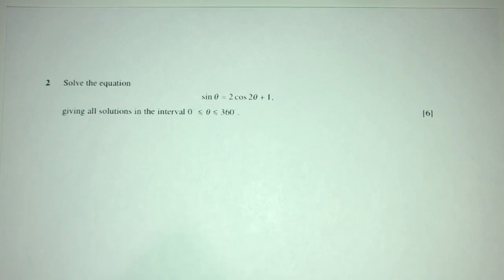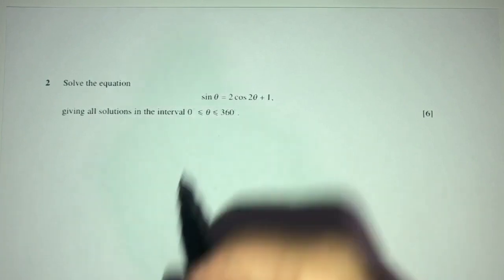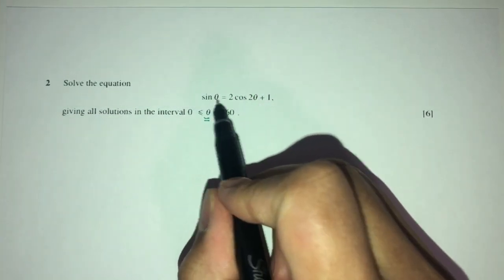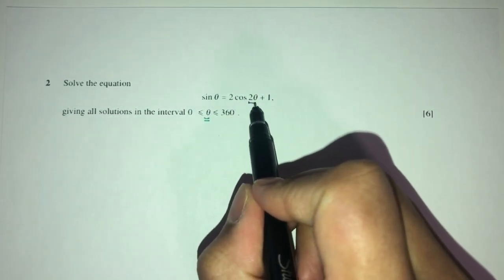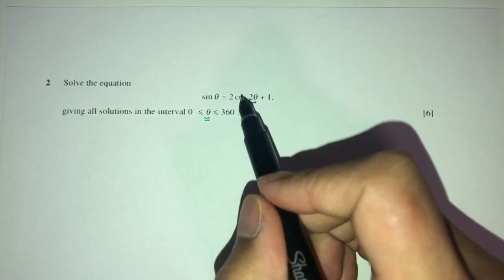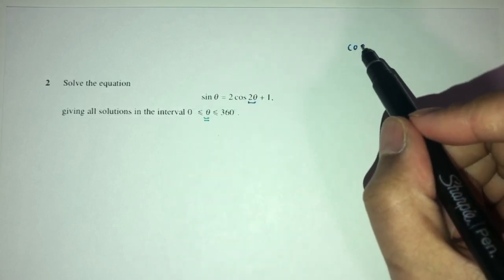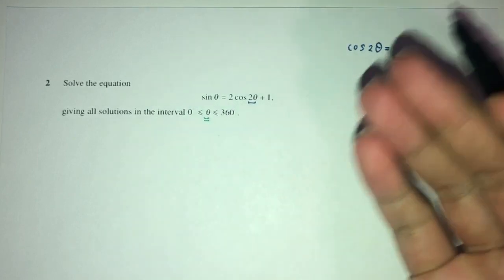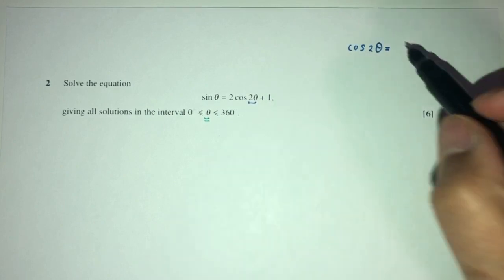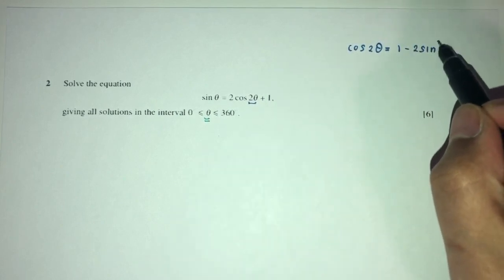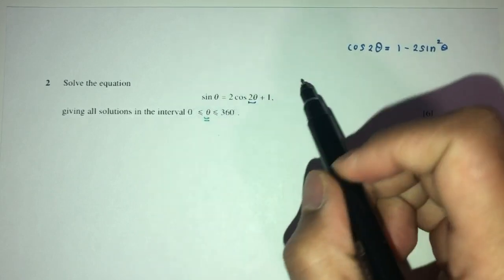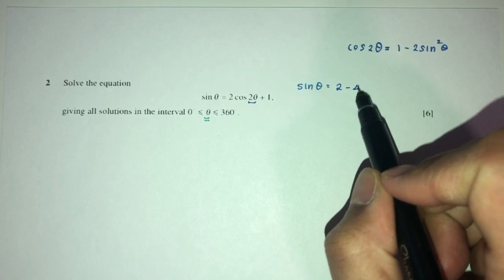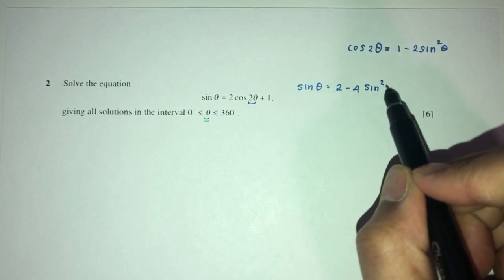Moving on to question two, we need to solve for θ. We have sin θ and cos 2θ, which have different angles, so we use the double angle formula. Since we already have sin, we expand cos 2θ as 1 − 2sin²θ. Substituting gives sin θ = 2(1 − 2sin²θ) + 1, which becomes sin θ = 2 − 4sin²θ + 1.